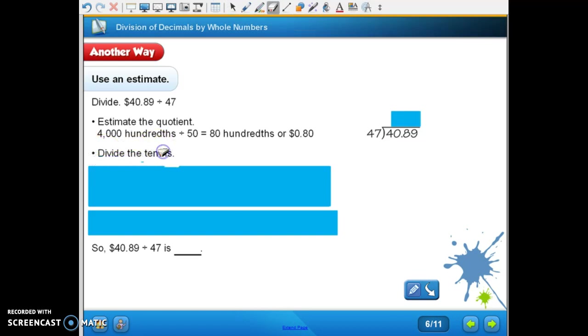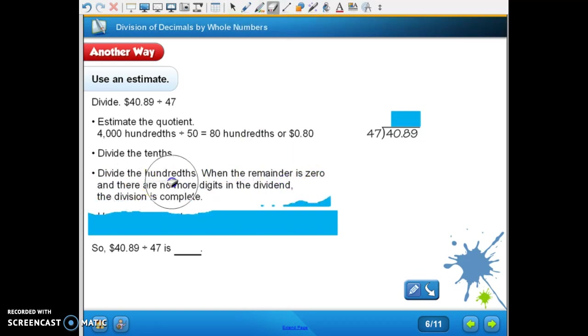Divide the tenths. How many forty-sevens in forty? None, right? So now we're working with four hundred and eight. How many forty-sevens in four hundred and eight? Eight.